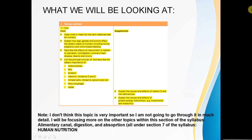Hello guys, welcome to another episode of IGCSE Biology Revision. Today we're going to be moving on and looking at the 7th section of the syllabus, Human Nutrition. And within that topic, we're going to be looking at the first component, which is really just about the human diet. I think this is by far the least important part of the topic, but I've decided to make a video on it anyway.